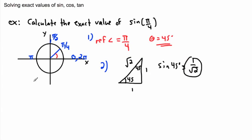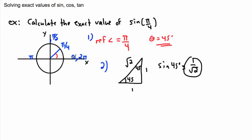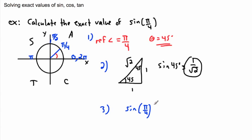Looking at quadrants, this angle is in the first quadrant — where all of sine, cosine, and tangent are positive. Did I get a positive answer? Yes. Therefore this is the answer. So sine of π over 4 equals 1 over square root of 2. That's the exact value without a calculator.